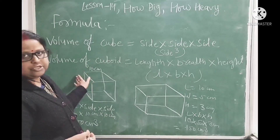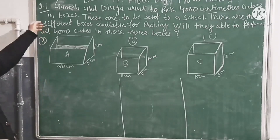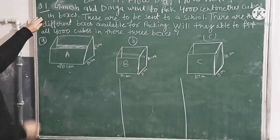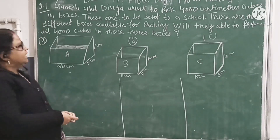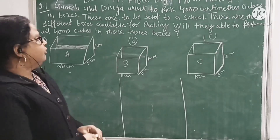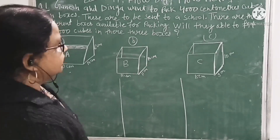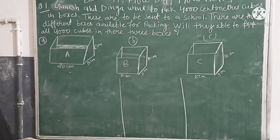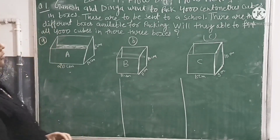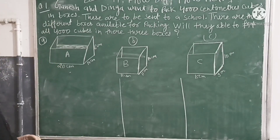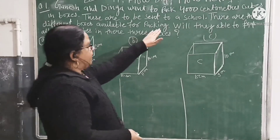Let's solve the next question. Question 1: Ganesh and Deka want to pack 4,000 cm³ cubes in boxes. These are to be sent to a school. There are 3 different boxes available for packing.